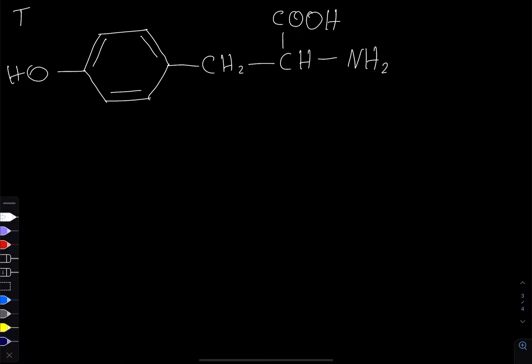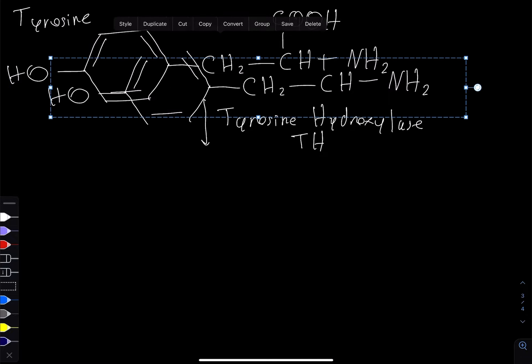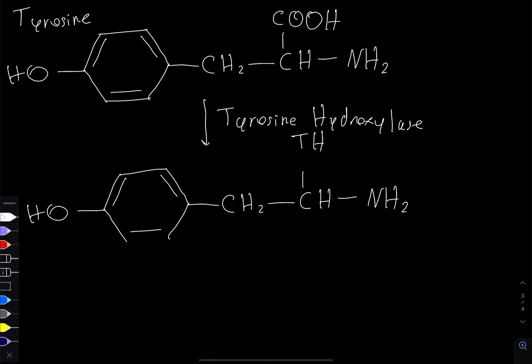This is tyrosine. An enzyme called tyrosine hydroxylase is going to act on this. Tyrosine hydroxylase can also be referred to as TH—you often see it as TH. What it's going to do is add a hydroxyl group, and that addition of a hydroxyl group turns this into L-DOPA.